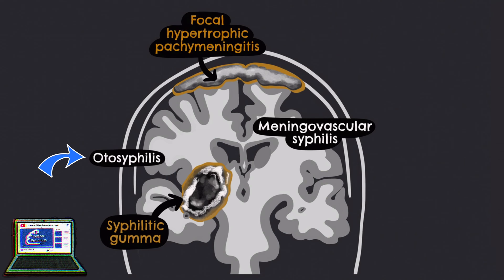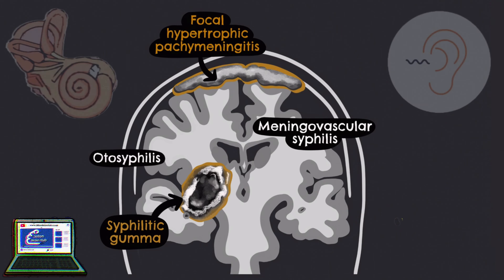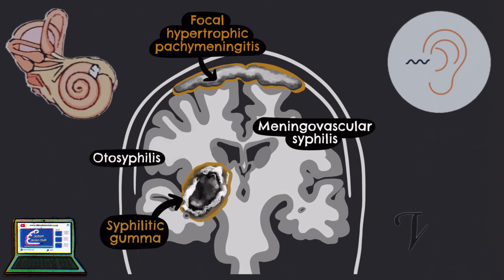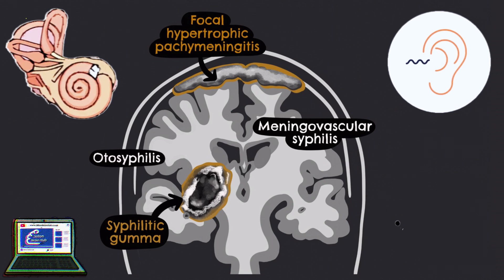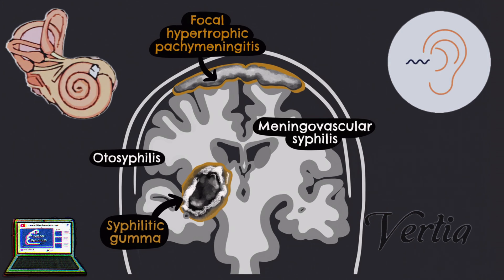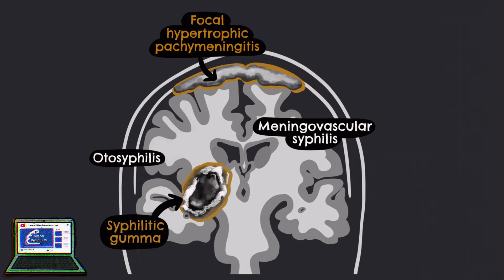Next up we have otosyphilis, which refers to an infection of the vestibulocochlear system. Its presentation typically starts with sensorineural hearing loss, tinnitus, and/or vertigo. This can even cause permanent hearing loss and may be one of the first presentations of neurosyphilis.